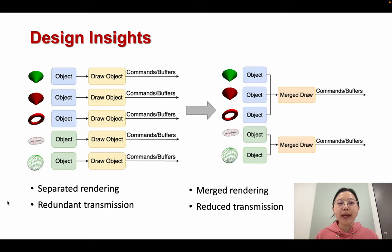The main issue is that current frameworks do not effectively harness the potential of WebGPU. For current frameworks, each object is rendered separately, leading to individual transmission of drawing commands and graphics data to the GPU. The desired system involves merging the rendering of different objects. After grouping the objects, each group can be rendered collectively, and the commands and data for the entire group are transmitted to the GPU as a unified unit.